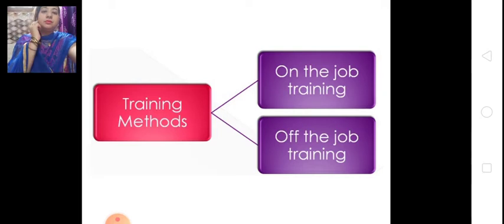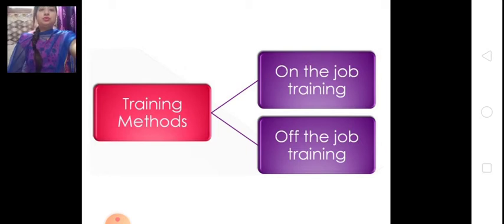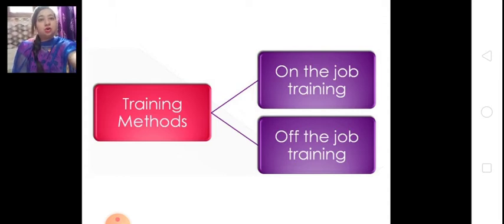Now let's look at training methods. Training methods are divided into two parts. First is on-the-job training and second is off-the-job training. On-the-job means training during the job — during doing a particular task. Off-the-job training means training after completing work, after working hours — like conferences and workshops. Training is provided to employees in these two ways.